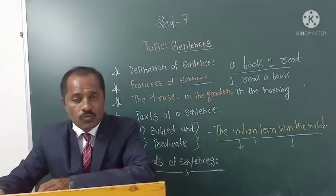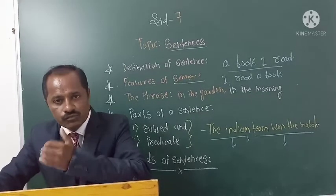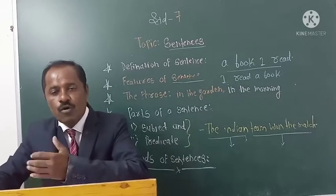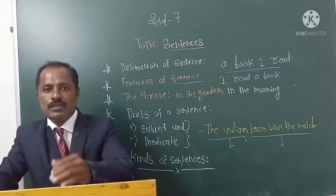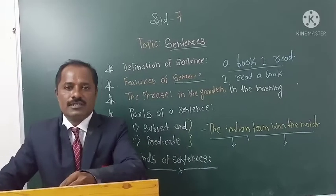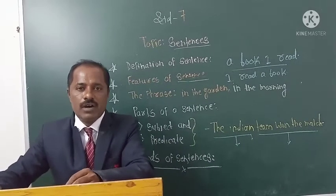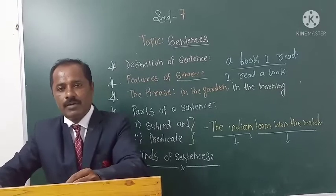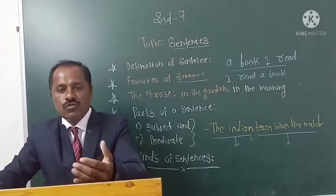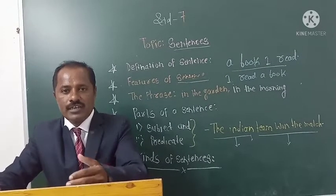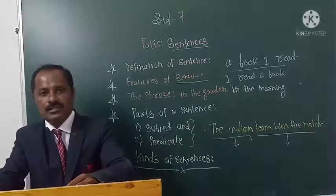So, what are the features of a sentence? A sentence is made up of some group of words which makes complete sense. A sentence always begins with a capital letter. A sentence always ends with a full stop, question mark, or exclamation mark. A sentence has a word, and a sentence consists of two parts: subject and predicate.